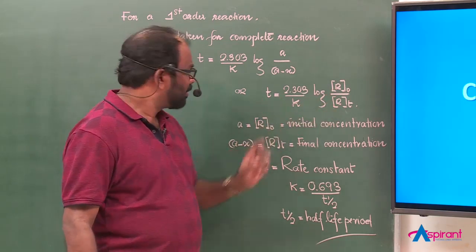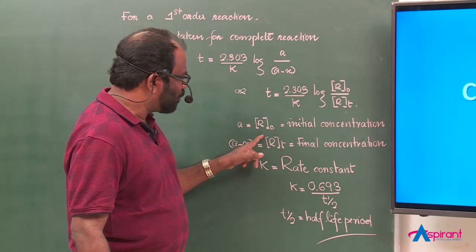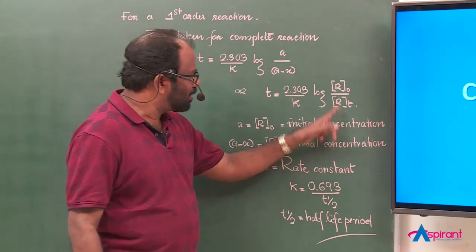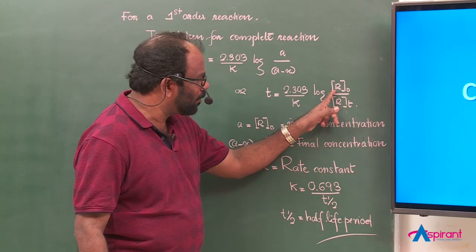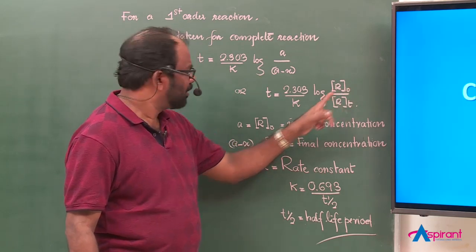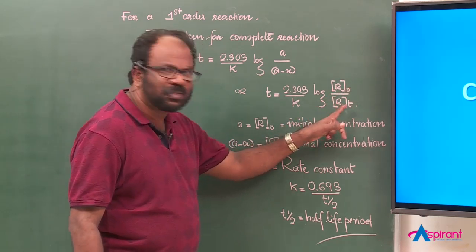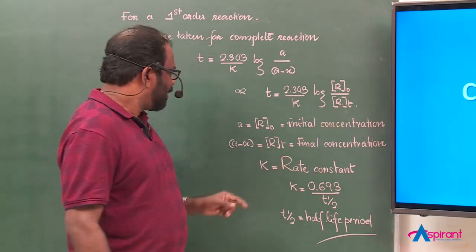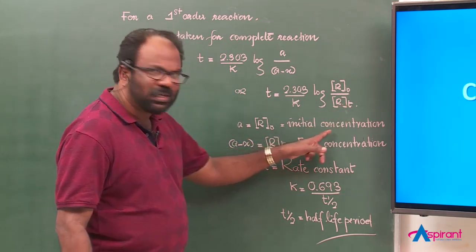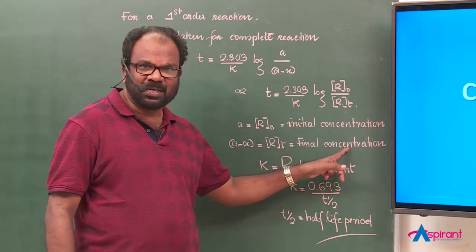Here, R₀ is equal to the initial concentration — that is, the concentration of the reactant at time zero. Rₜ is the concentration of the reactant after time T. So R₀ is the initial concentration and Rₜ is the final concentration of the reactant.